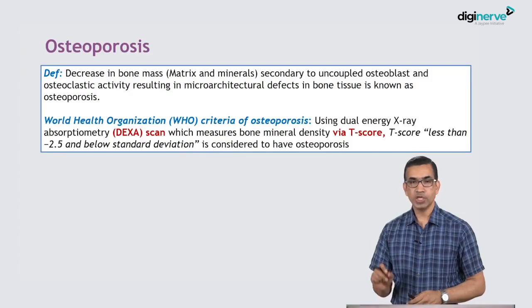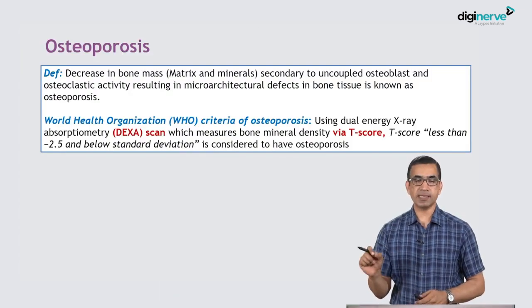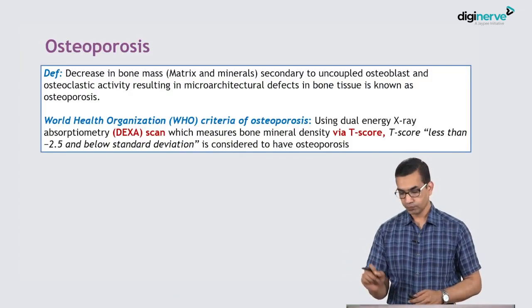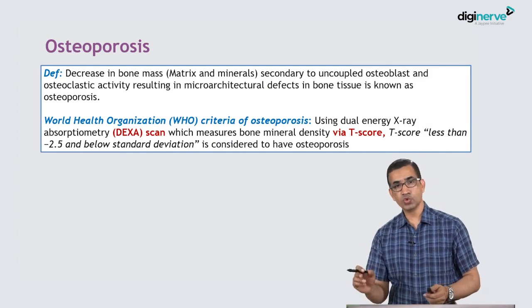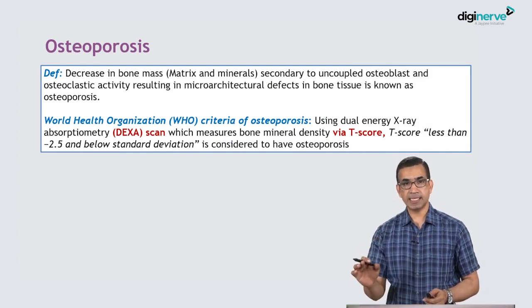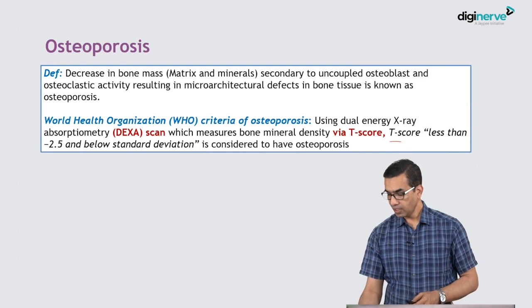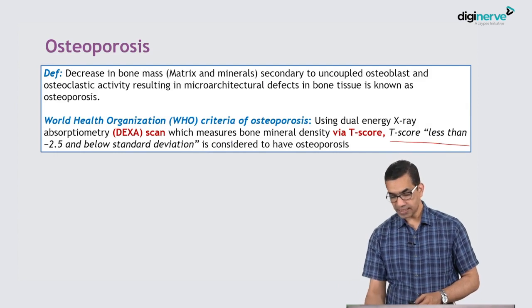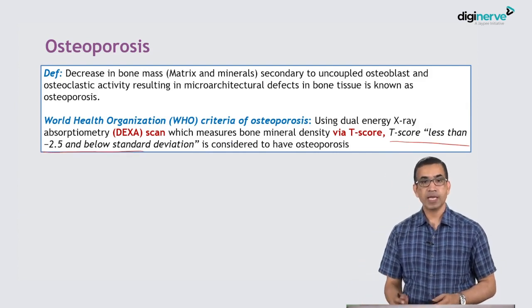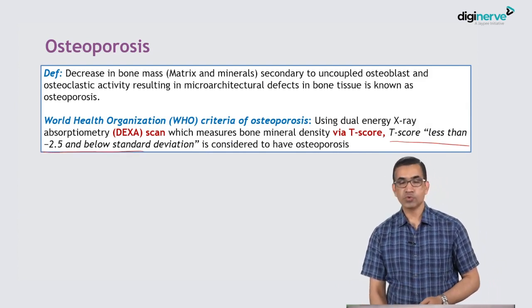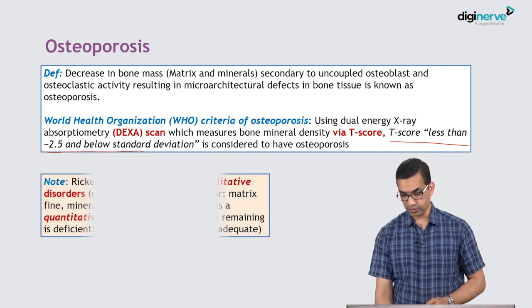What is the WHO criteria for osteoporosis? Using the DEXA scan, which measures bone mineral density by two scores — T and Z — we focus on the T score. If the T score is less than minus 2.5 standard deviations, that is known as osteoporosis.